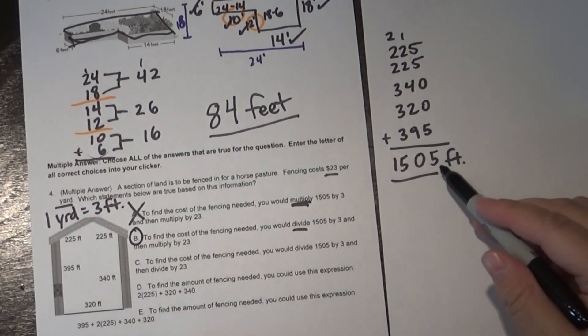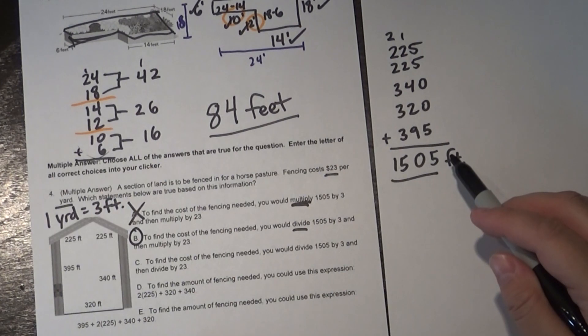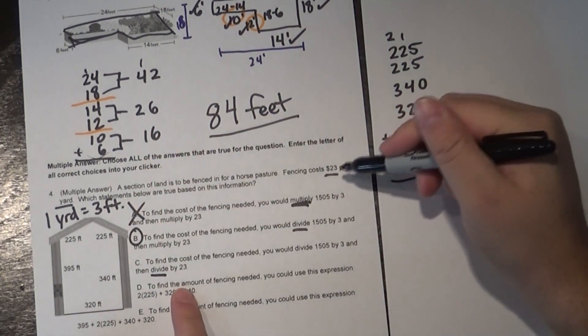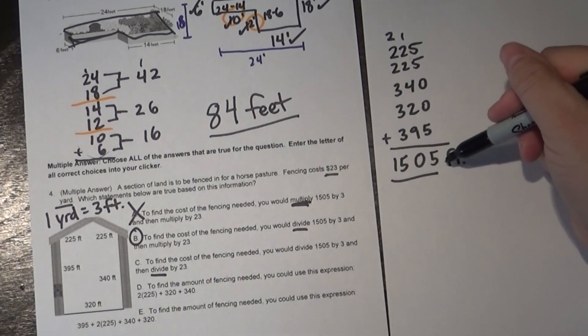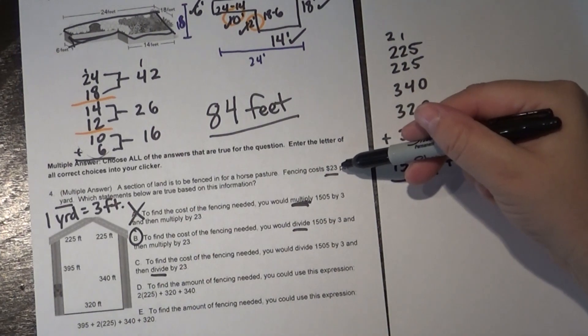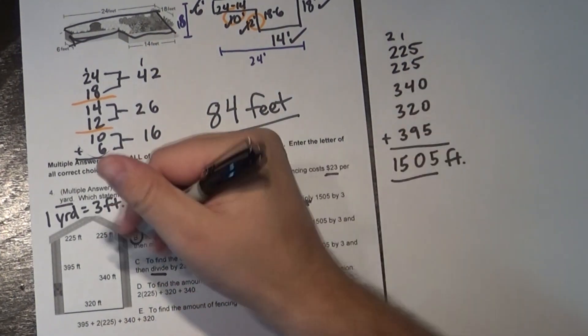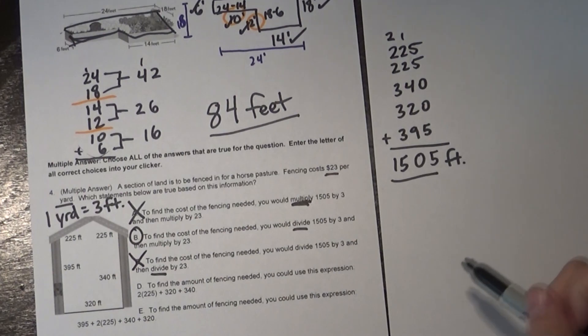And then letter C says to find the cost of the fencing needed you would divide 1,505 by three. I like what I'm hearing so far. And then divide by 23. Whoops! They had me there early and then they lost me when we're dividing. Okay think about it. It's $23 per yard. If I figure out how many yards there are by dividing 1,505 by three then I'm going to have to multiply by 23 because that's how much each yard costs. I'm not going to divide by 23 so I can't say C is correct either.